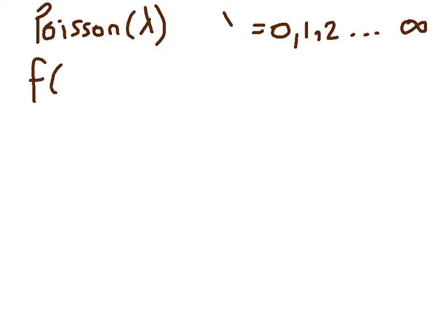As we know, the mass function for y given lambda is equal to lambda to the power y, e to the minus lambda, divided by y factorial.